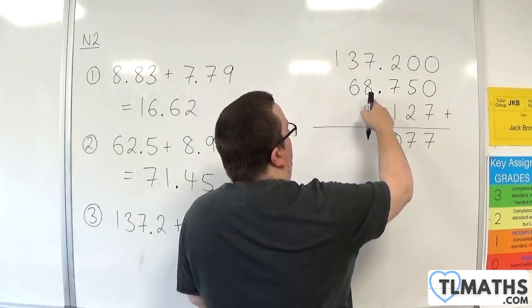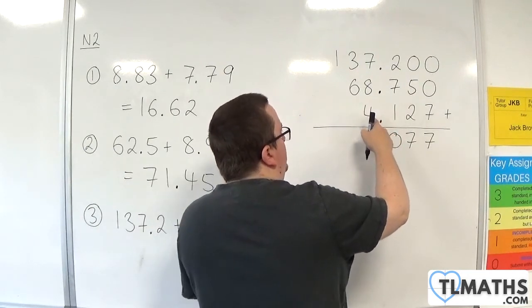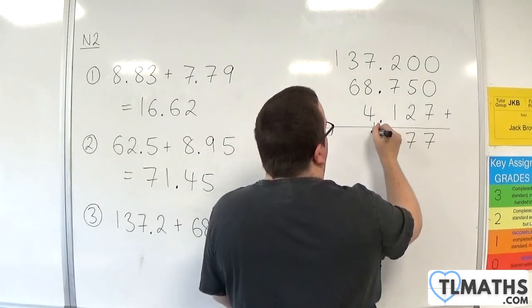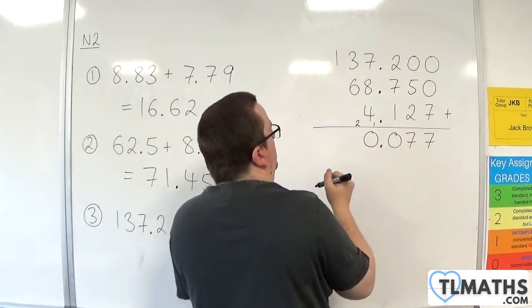7 plus 8 is 15, plus the 4 is 19, plus the 1 is 20. So, put the 0, carry 2 this time, because we've got 20.